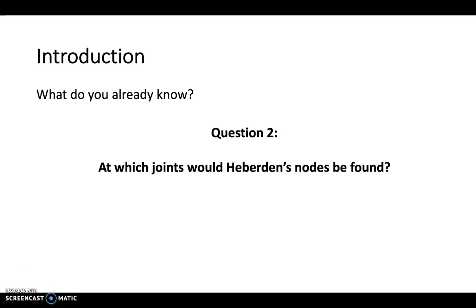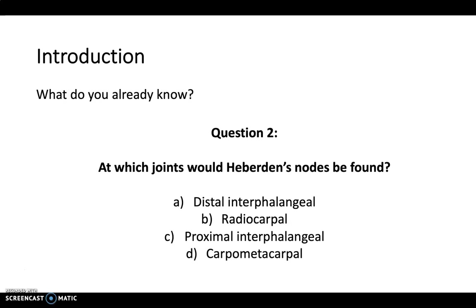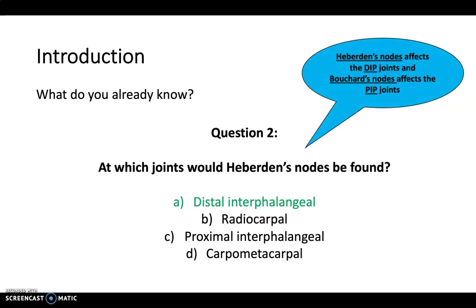Question two: at which joints would Heberden's nodes be found — the distal interphalangeal joint, the radiocarpal joint, the proximal interphalangeal joint, or the carpometacarpal joints? The answer is A: Heberden's nodes affects the distal interphalangeal joints.